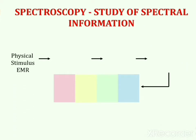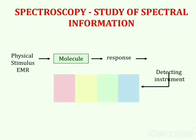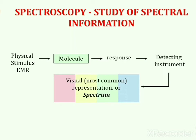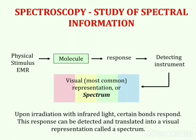We can understand spectroscopy through this representation. When any physical stimulus — that is, EMR or electromagnetic radiation — is incident upon a molecule under investigation, it generates a response. Detecting instruments detect that response and generate a spectrum, which is a visual representation of the various structural properties of the molecule. The study of this spectrum is the base of spectroscopy.